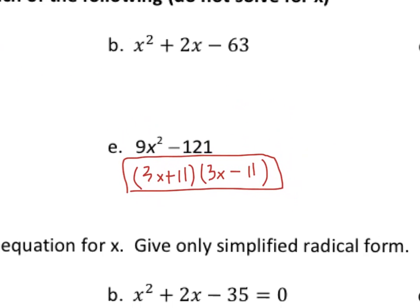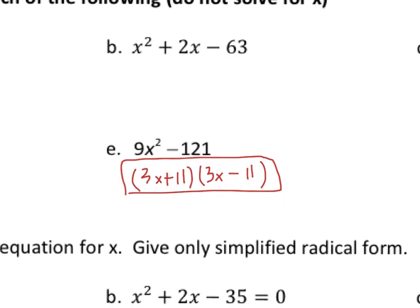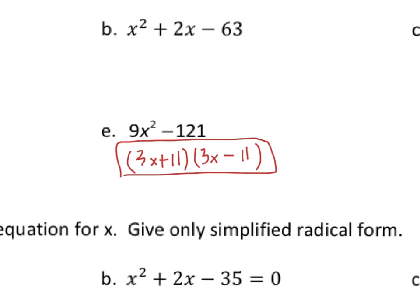For part B, if you want to look at how to factor that, you've got three terms — so it's not going to be difference of two squares. The way I teach to factor this is the MAF method. Everything begins with MAF: M is the number you get when you multiply A times C. In this case A is 1 and C is negative 63, so M is negative 63. A is 2.